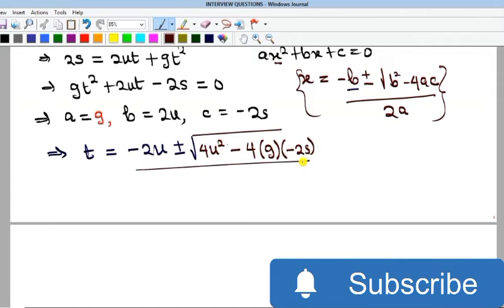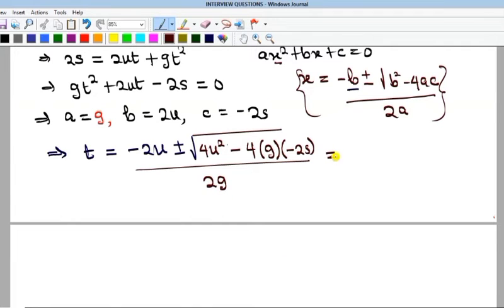Okay, so everything is all over 2a, which is the same as 2g. So if I push this a little further, I will have minus 2u plus or minus square root of 4u squared, and here is going to now be plus, because you have this plus here, or this minus here, multiplying this minus, that will give you plus, then 4 multiplying 2 will be 8. So I'll have 8gs.